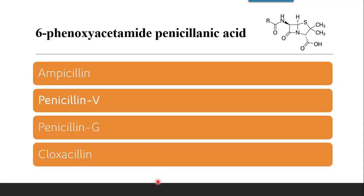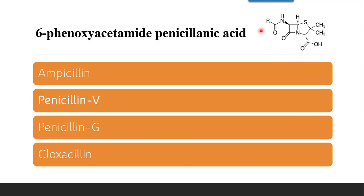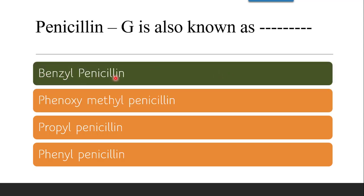Why is it called benzyl penicillin? If you look into the structure of beta-lactam antibiotics, the basic structure contains a 4-membered beta-lactam ring and a 5-membered thiazolidine ring containing sulphur and nitrogen. There is an amide group NHCO and an R group. Depending on R, various penicillins are formed. In the case of benzyl penicillin, R is C6H5CH2 attached to the amide group — that is the reason it is also known as benzyl penicillin.